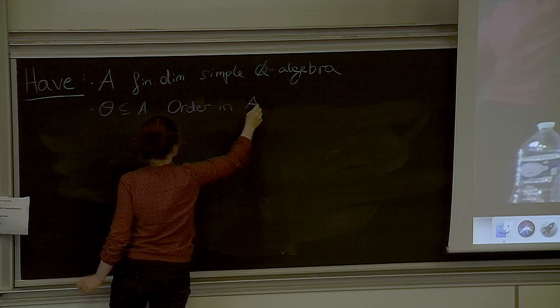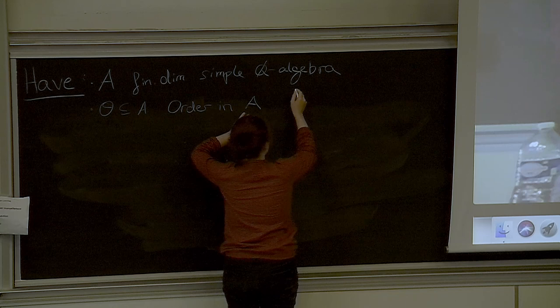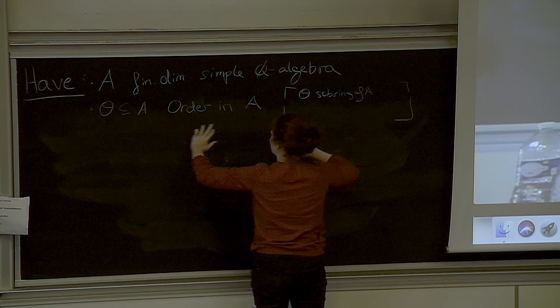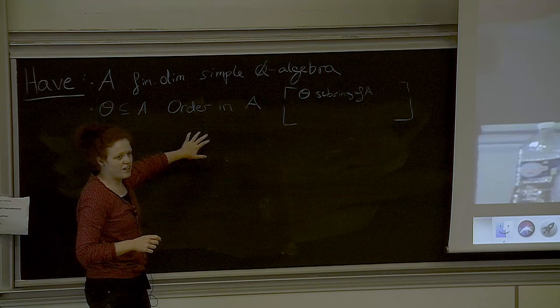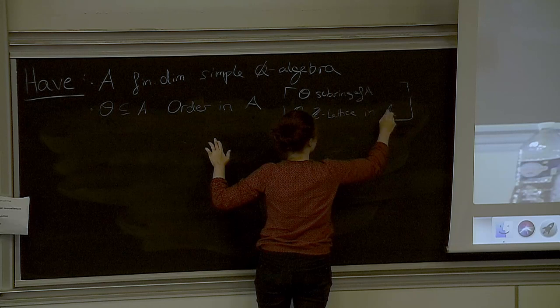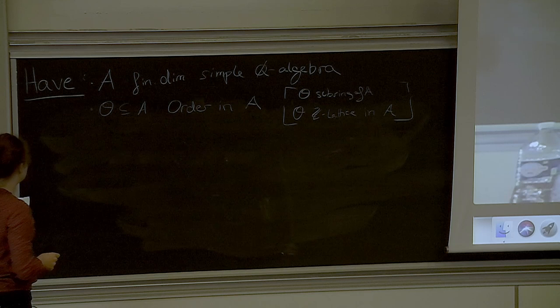What does it mean for O to be an order in A? Well, it means basically two things. First of all, we want that O is a subring of A. And what we also want is that O simultaneously is a lattice in A. So this is what we've got. And our goal is to compute the unit group of O.